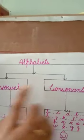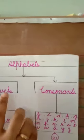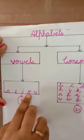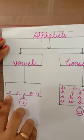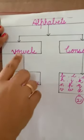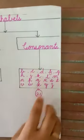Alphabets are divided into two parts. One is vowel and another is consonant. What is vowel? A, E, I, O, U. These five letters are called vowel and rest of all are called consonant. There are 21 letters in consonant.